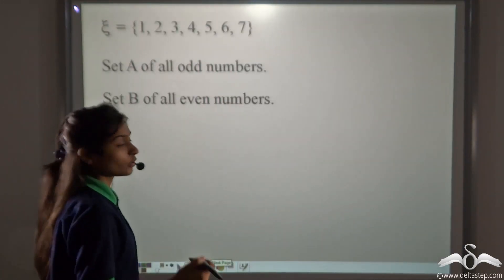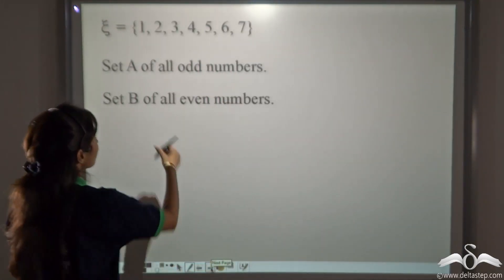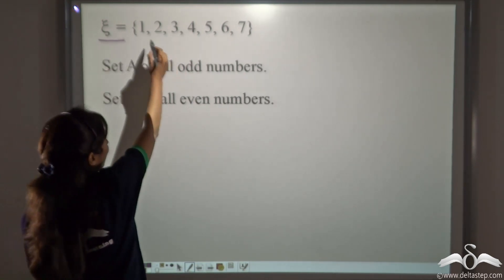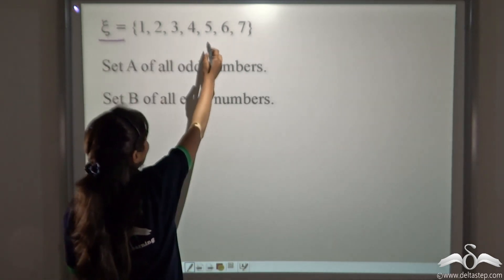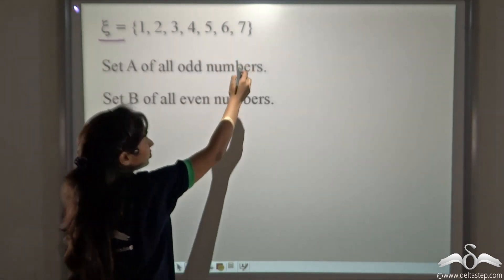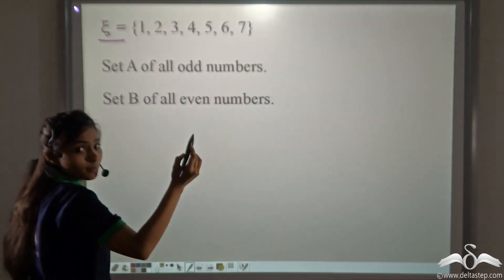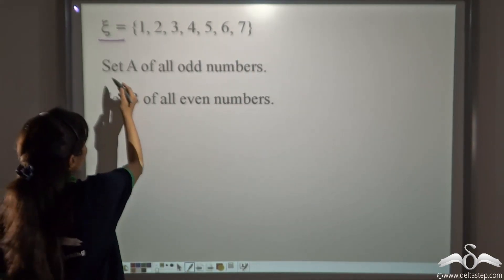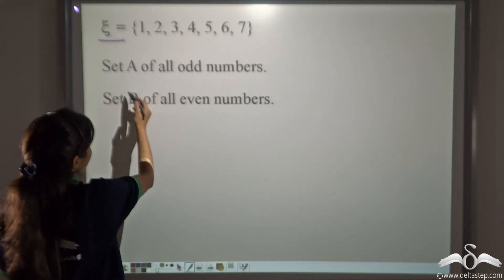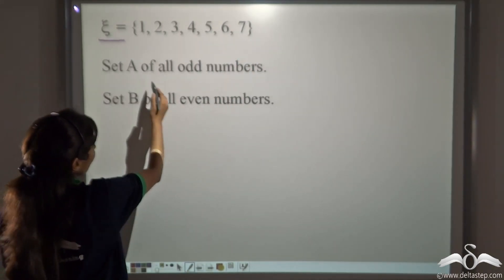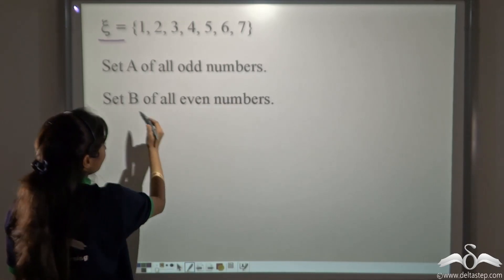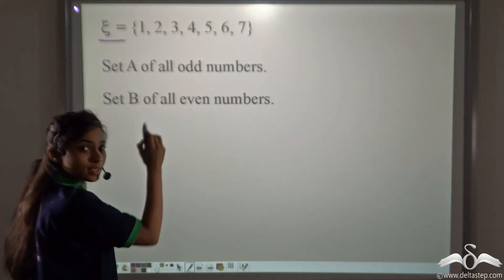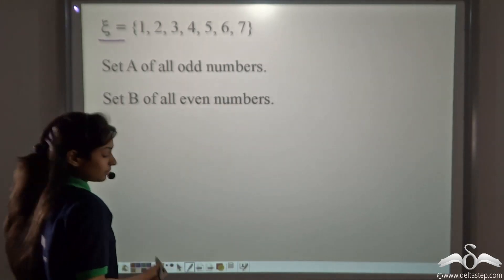Now do it yourself. Here the universal set is {1, 2, 3, 4, 5, 6, 7}, that is the natural numbers less than 8. Now you have to represent set A of all odd numbers and set B of all even numbers in this set.